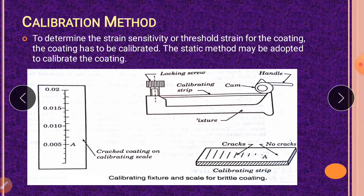So what we do? We will make this calibrating strip and apply some load over this calibrating strip. And you can see the scale. This cracked coating on the scale will represent at what amount of distance, what is the amount of strain that develops. You can see here the crack.